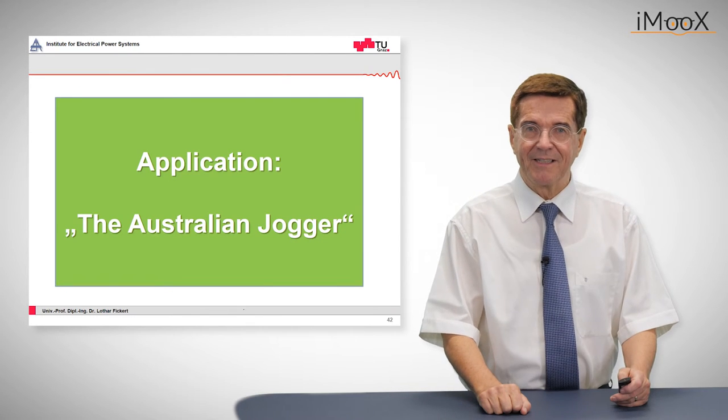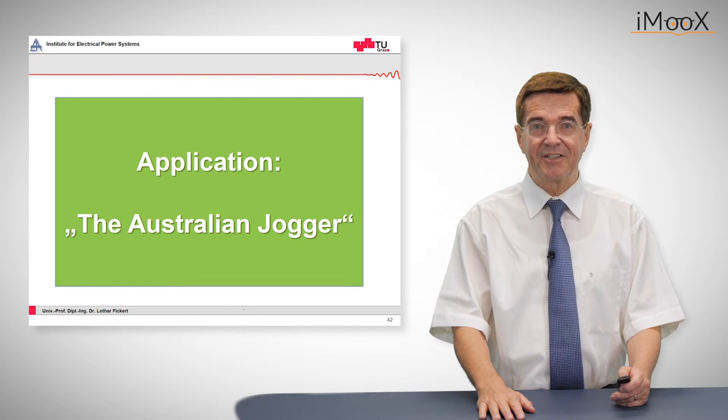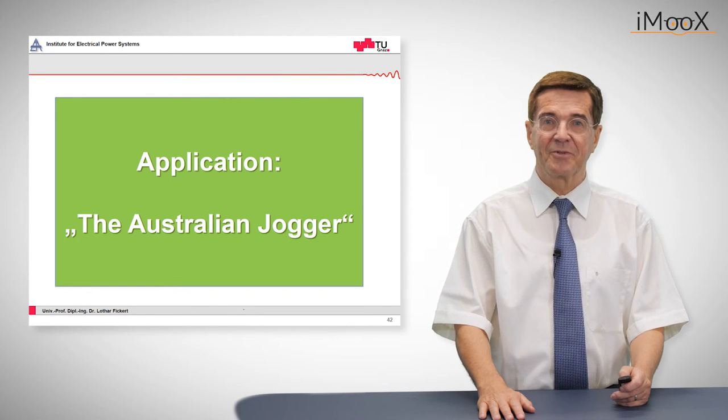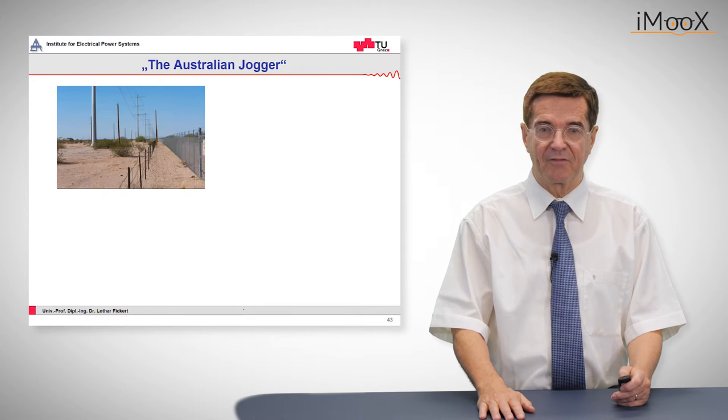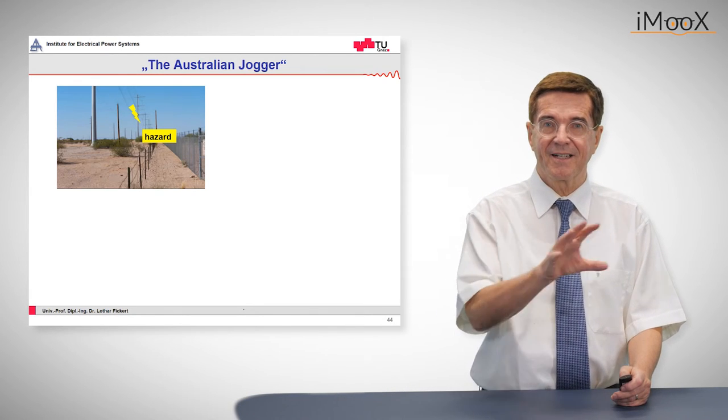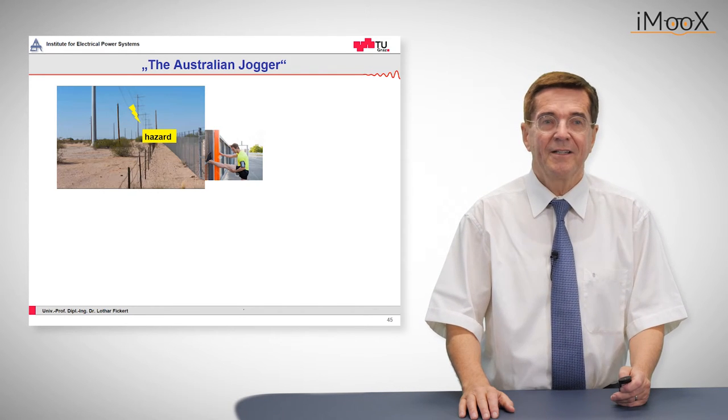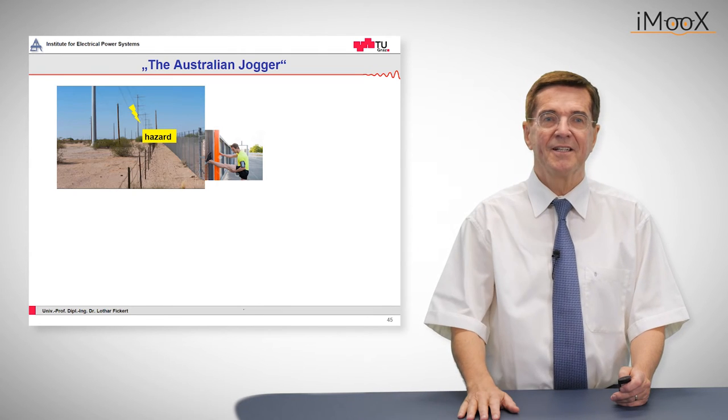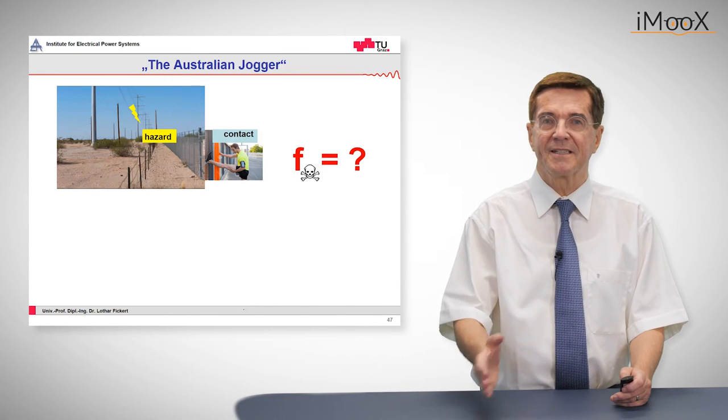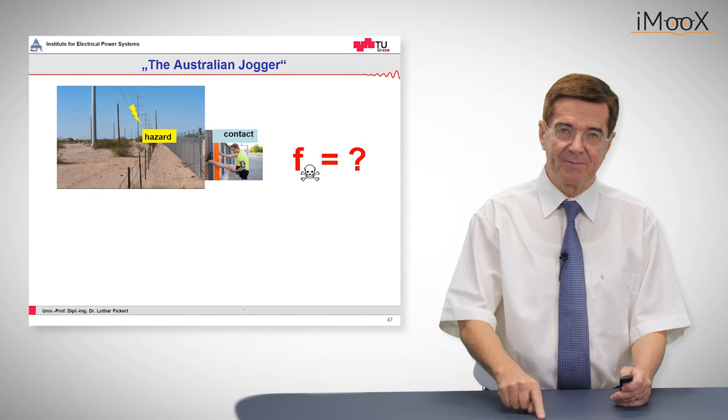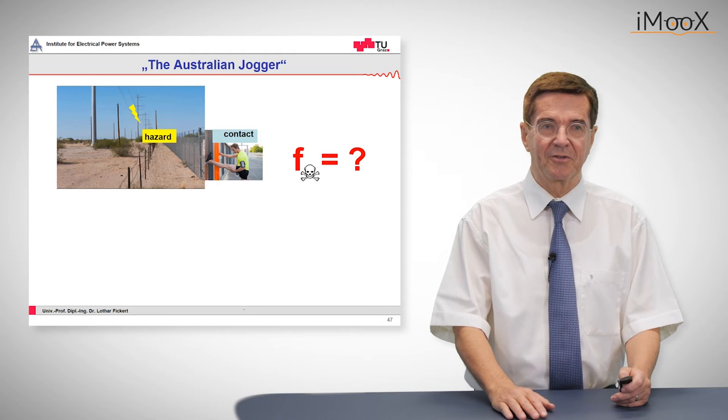Now we have an application, the so-called Australian jogger which is well documented in the regulation EG minus zero which is an Australian de facto standard. We see here an overhead line which in case there is a flash over turns into hazard. Then we see a jogger. The jogger comes by and stretches himself by putting the legs and the hands to the fence. And this is the contact phase. Now let's see about the frequency. Is this dangerous or what is the probability? Principally it is dangerous but as everywhere in real life there is a residual risk and we want to look at this.